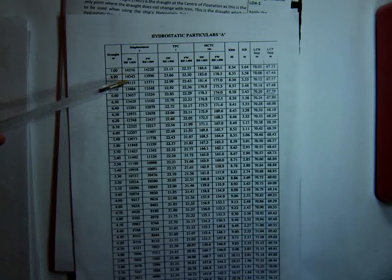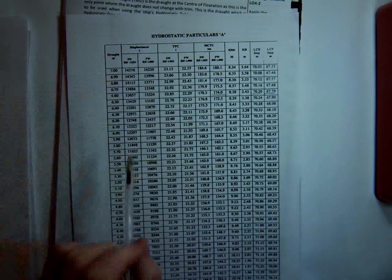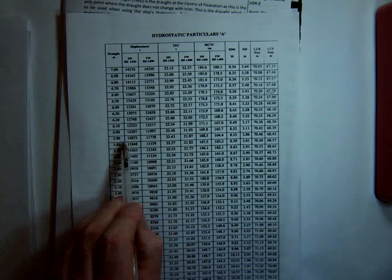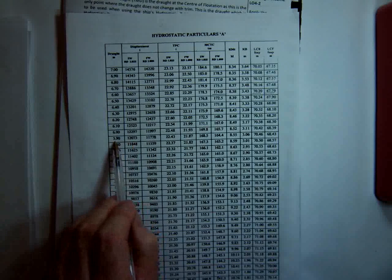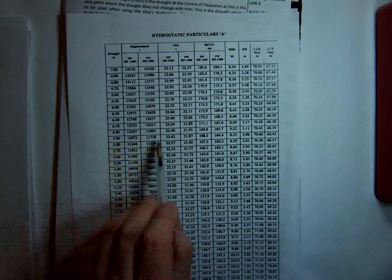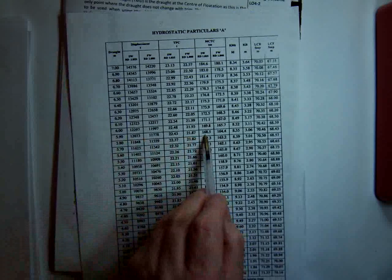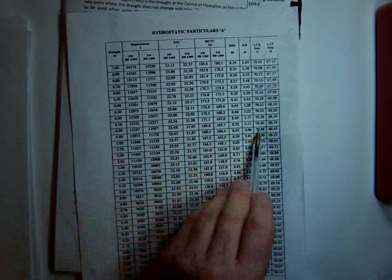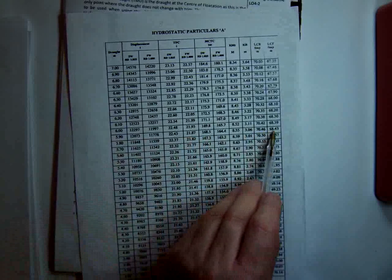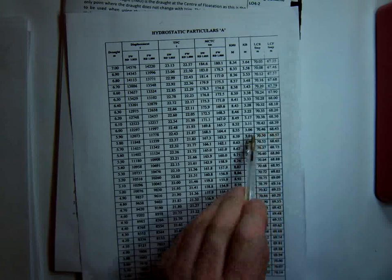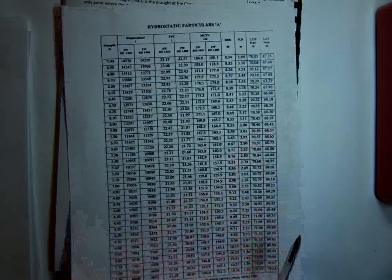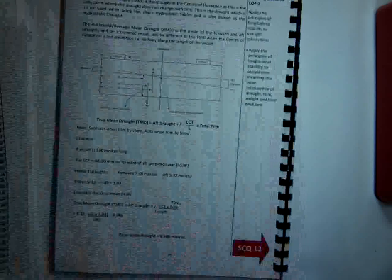You go into the table with that displacement, if for example it was 12073, then our true mean draft would be 5.9. Our MCTC in salt water would be 168.5. Our LCB would be 70.46. And LCF would be 68.43. So we get all those values from the hydrostatic particulars.